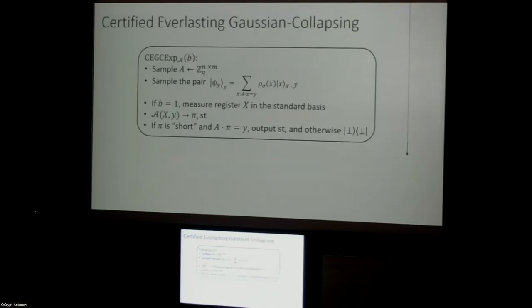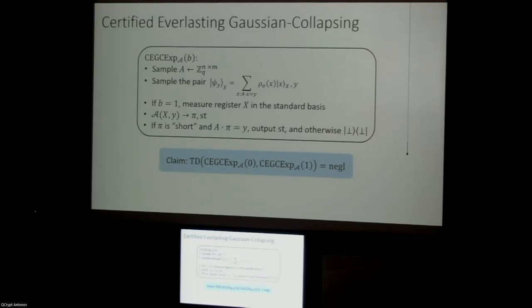Here is how we formalize the certified everlasting Gaussian collapsing game. We sample a wide matrix A, prepare a Gaussian-weighted superposition over x such that Ax equals Y, and then depending on the bit B parameterizing the experiment, we either leave the state alone or measure it in the standard basis. We give Y and the resulting register x to the adversary. Our claim is that the trace distance — whether we measured or didn't — is negligible. Essentially, if the adversary produces a valid deletion certificate, even given unbounded time, they cannot tell whether we had previously collapsed the state or not.